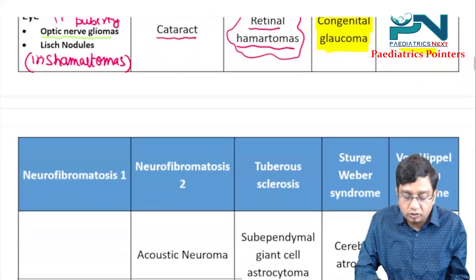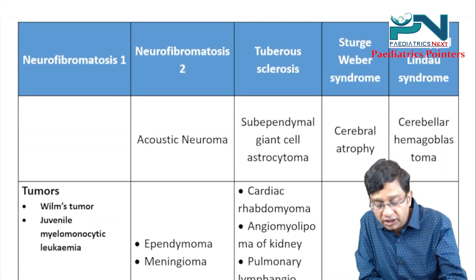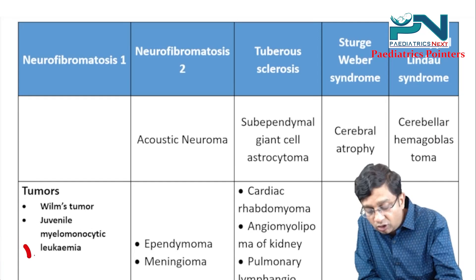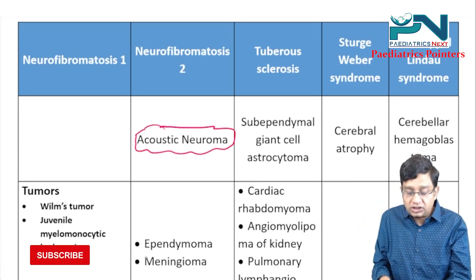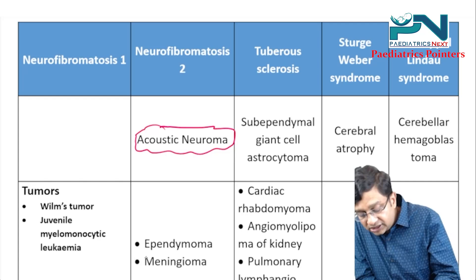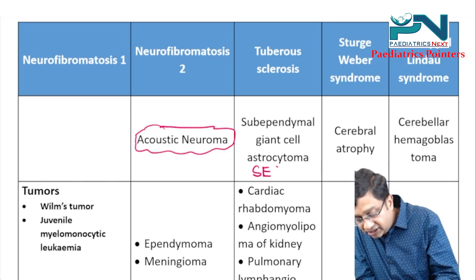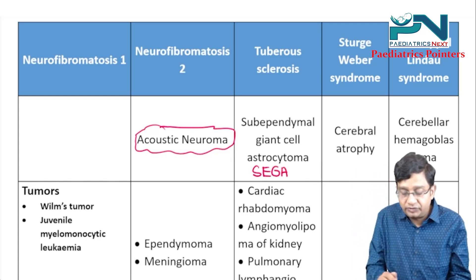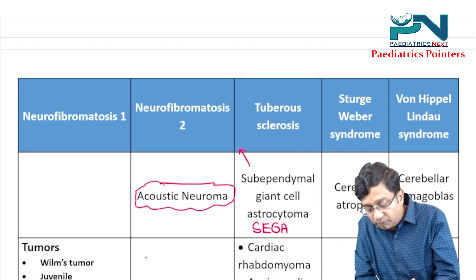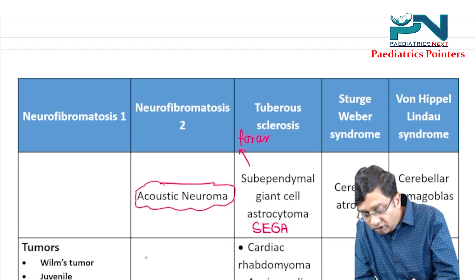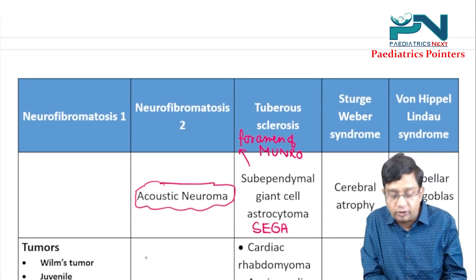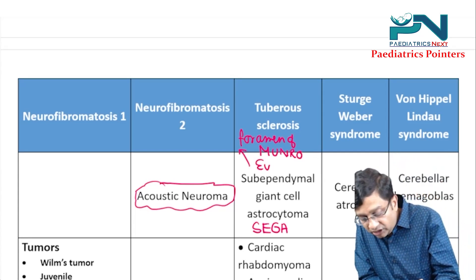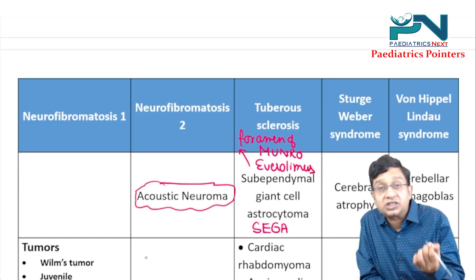Moving to brain changes: in NF2, there are acoustic neuromas. In tuberous sclerosis, you get the tumor subependymal giant cell astrocytoma (SEGA), which can block the foramen of Monro, leading to hydrocephalus. The drug given for SEGA is everolimus.